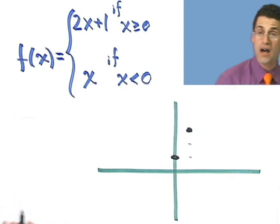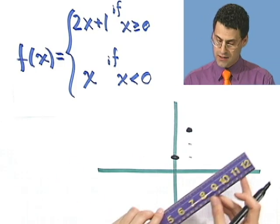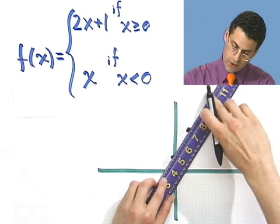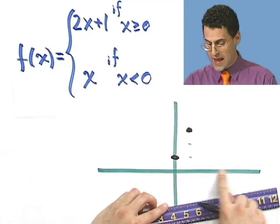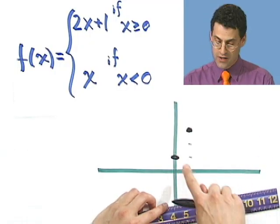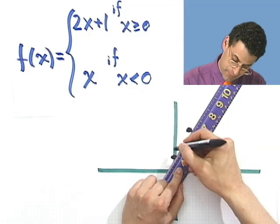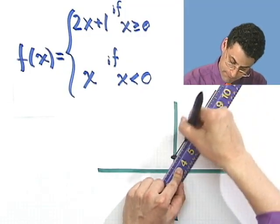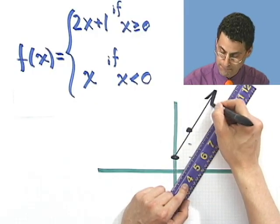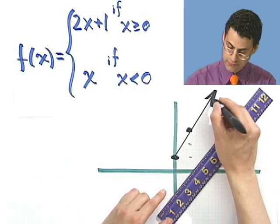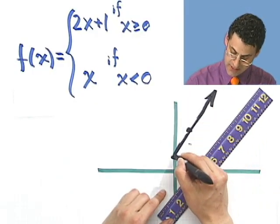But I want you to remember that I'm not going to graph the line all the way through, but only for when x is greater than or equal to zero. So I'm going to start here and go out. So it looks like this. But I stop right there.